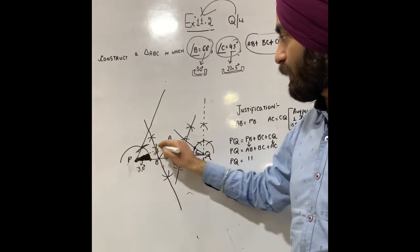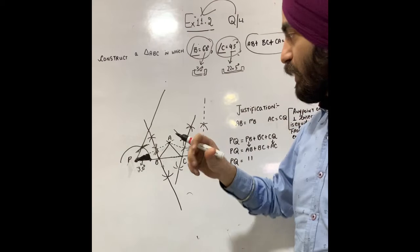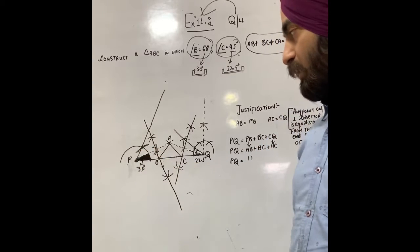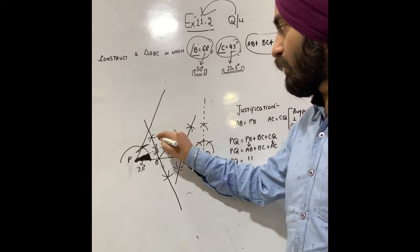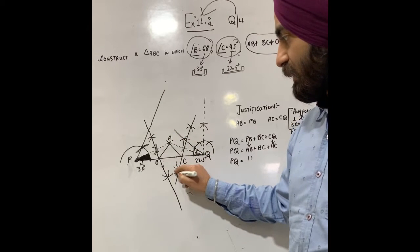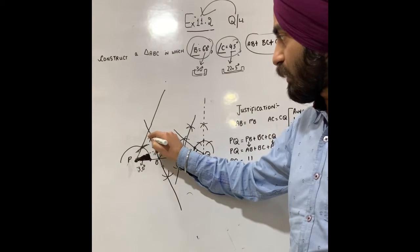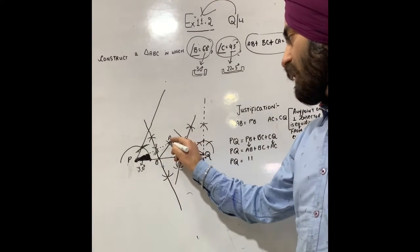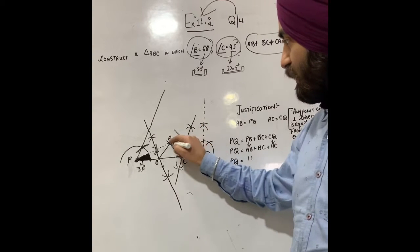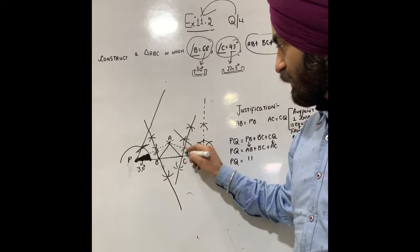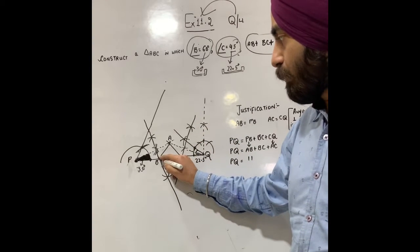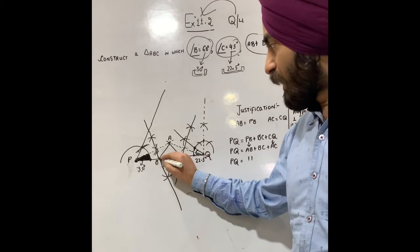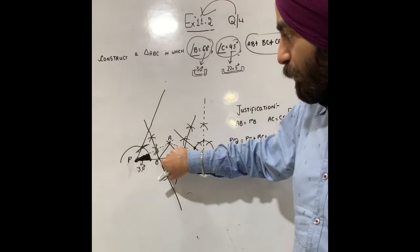Now, where the dotted lines intersect, we name that point A. Now, we draw the perpendicular bisector of AP. Using compass set to more than half the distance, we construct the perpendicular bisector of segment AP.